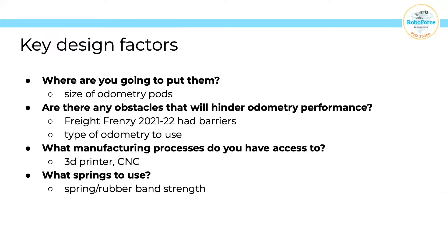Some key design factors: first, where are you going to put them? Wherever you decide to place your odometry pods will dictate the size of your pods. Second, are there any obstacles on the playing field that will hinder odometry performance? For example, in Freight Frenzy last season the game field had barriers. When you go across them, the robot lifts up, meaning the odometry pods stick out below, which could leave them susceptible to being hit by the barrier and getting damaged.